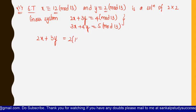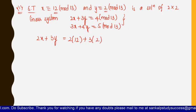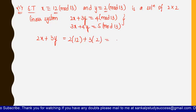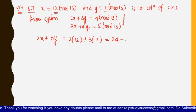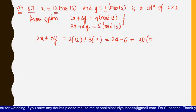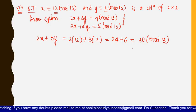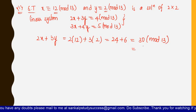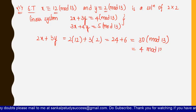So 2×12 + 3×2 gives us 24 + 6 = 30, which is 30 mod 13. To simplify 30 mod 13: 13×2 = 26, so the remainder is 4. Therefore 30 mod 13 = 4 mod 13. That is the result for 2x + 3y.